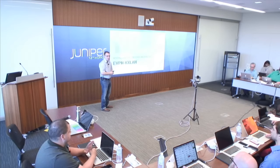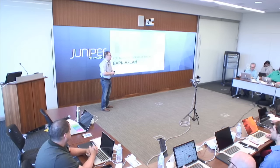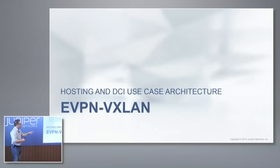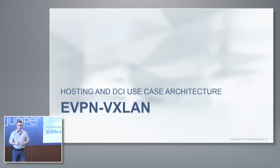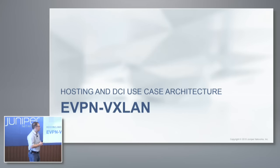My name is Doug Hanks. I'm the director of architecture here at Juniper. My team basically builds the hardware and software for our switching products here at Juniper. What I want to talk about is go a little bit deeper on this EVPN VXLAN use case and give you an idea of what that looks like and how it works.